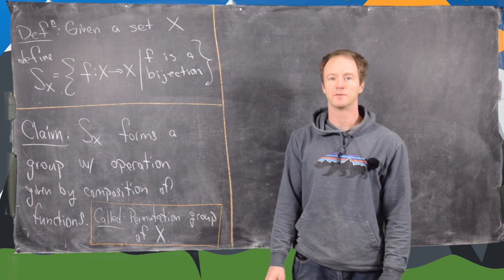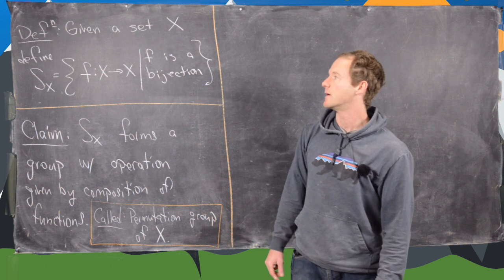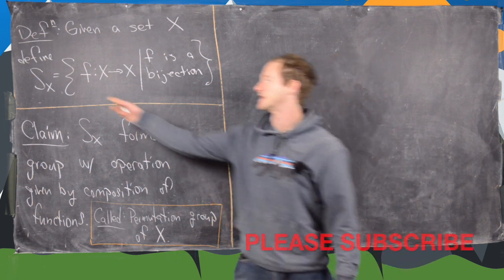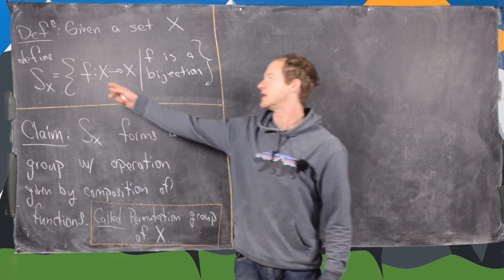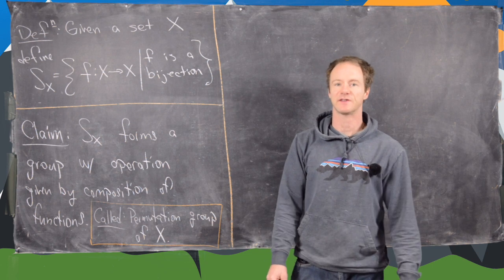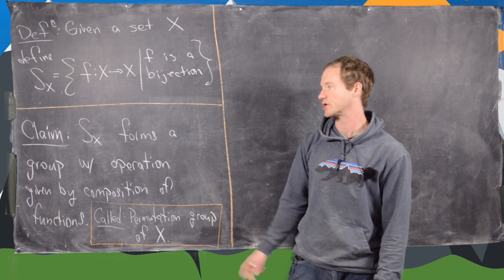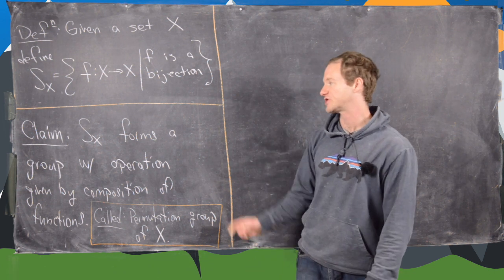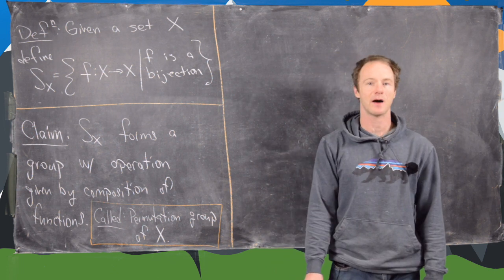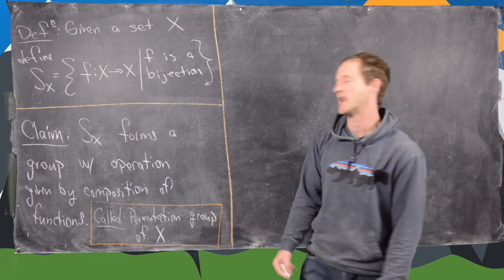In this video we want to keep talking about groups with a new family of examples known as permutation groups. For the definition, let's say we have an arbitrary set x, and we define S_x to be all functions from x to x such that f is a bijection — meaning the function is one-to-one and onto, an injection and a surjection. We want to prove that S_x forms a group whose operation is given by composition of functions. This is called the permutation group of the set x.